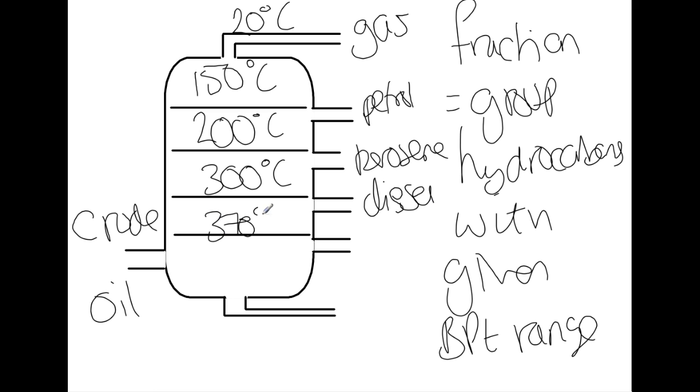At 370 degrees we get fuel oil and down at the bottom at 400 degrees we get paraffin and other waxes. As you go from the top of the column to the bottom of the column, the length of the carbon chains increases.